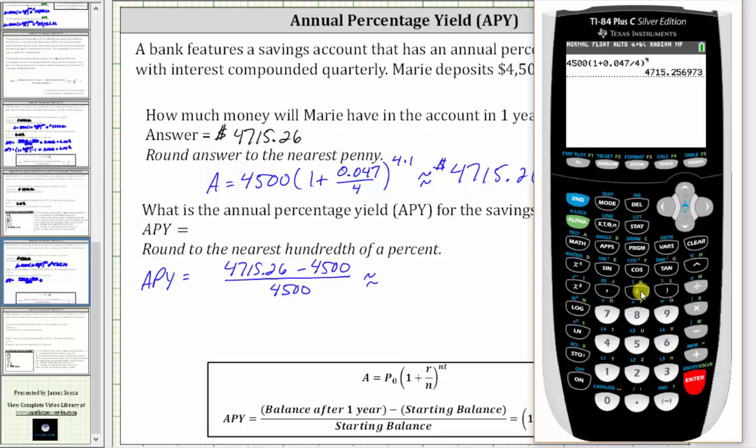So we have in the numerator, 4,715.26 minus 4,500, in parentheses, and then divided by 4,500. We'll round to four decimal places. Because we have a three in the fifth decimal place, we round down to 0.0478.